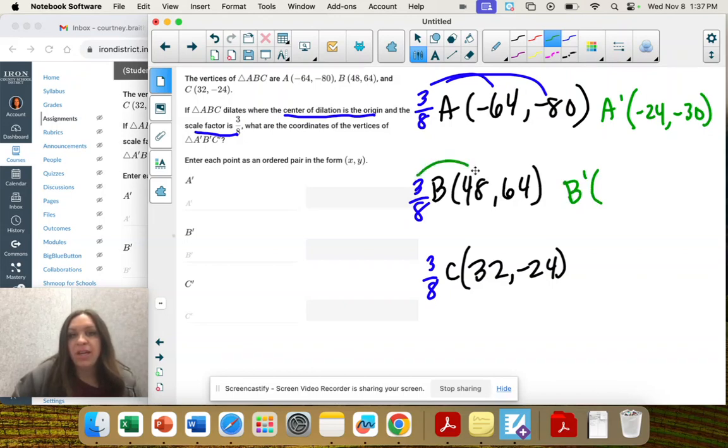B prime, 3 8ths times 48 is 18. 3 8ths times 64 is positive 24.